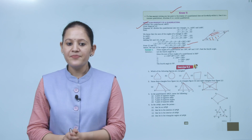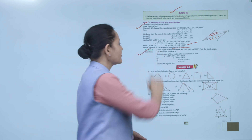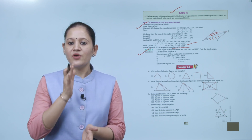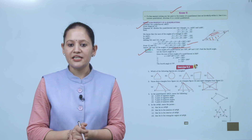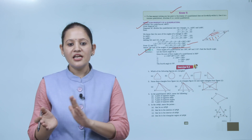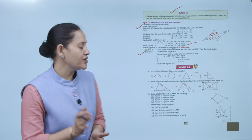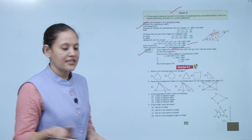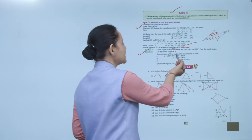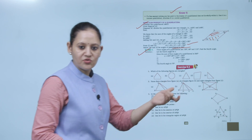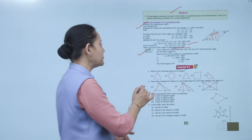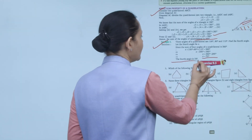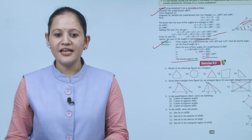Example: three angles of a quadrilateral are 100°, 80°, and 110°. Find the fourth angle. Let the fourth angle be x°. Since the sum of four angles of a quadrilateral is 360°: x + 100 + 80 + 110 = 360. So x = 360 − 290 = 70°. The fourth angle is 70°.